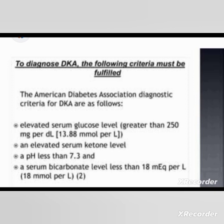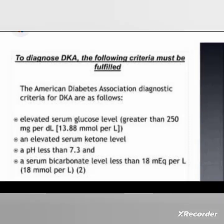Urine ketone bodies are usually assessed as the easiest method. On arterial blood gas analysis, pH will be less than 7.3, indicating acidosis — diabetic ketoacidosis patients typically suffer from metabolic acidosis. Serum bicarbonate level will be less than 18 mEq/L, and HbA1c value should also be assessed.